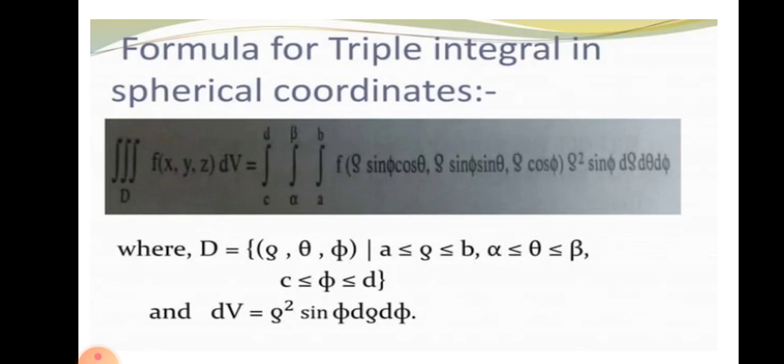Where D is equal to the set of (ρ, θ, φ) such that a ≤ ρ ≤ b, α ≤ θ ≤ β, and c ≤ φ ≤ d. And dV is equal to ρ² sinφ dρ dθ dφ.